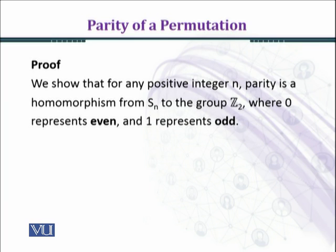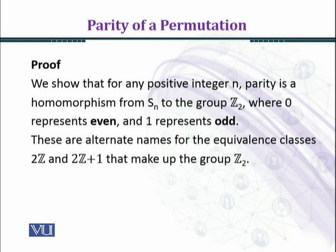We show that for any positive integer n, parity is a homomorphism from the symmetric group Sn to the group Z2, where 0 represents even and 1 represents odd. These are alternate names for the equivalence classes 2Z and 2Z plus 1 that make up the group Z2.